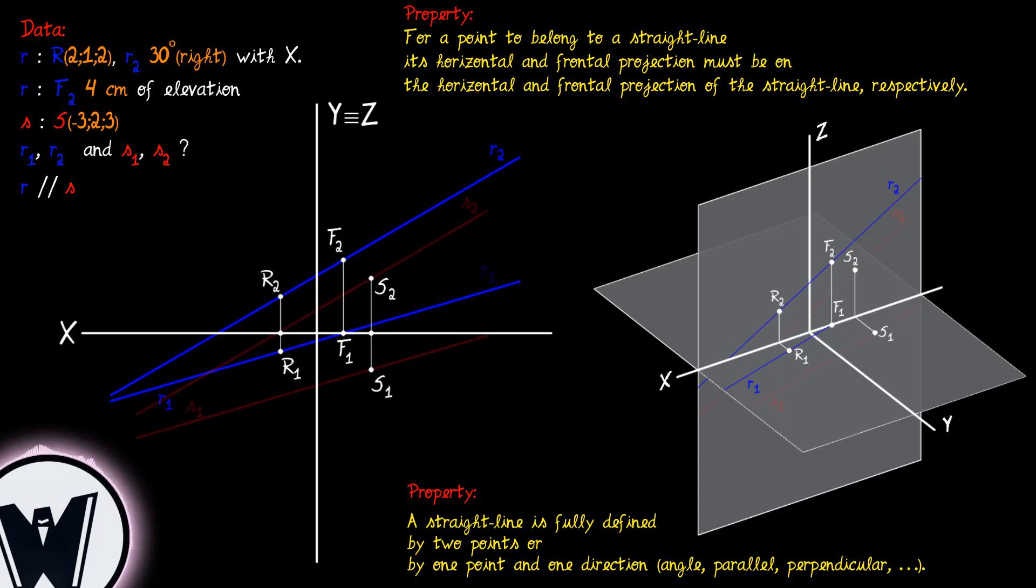The projections of the straight line S pass through the corresponding projections of point S, verifying the aforementioned property of a point belonging to a straight line. On our 3D drawing we can now represent the 3D points R and S and the corresponding straight lines.